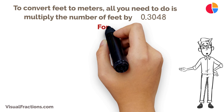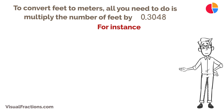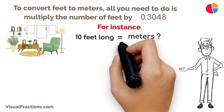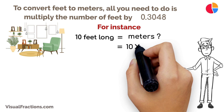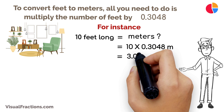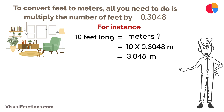For instance, if you have a room that's 10 feet long and you want to know its length in meters, simply multiply 10 feet by 0.3048. That gives you a total of approximately 3.048 meters.